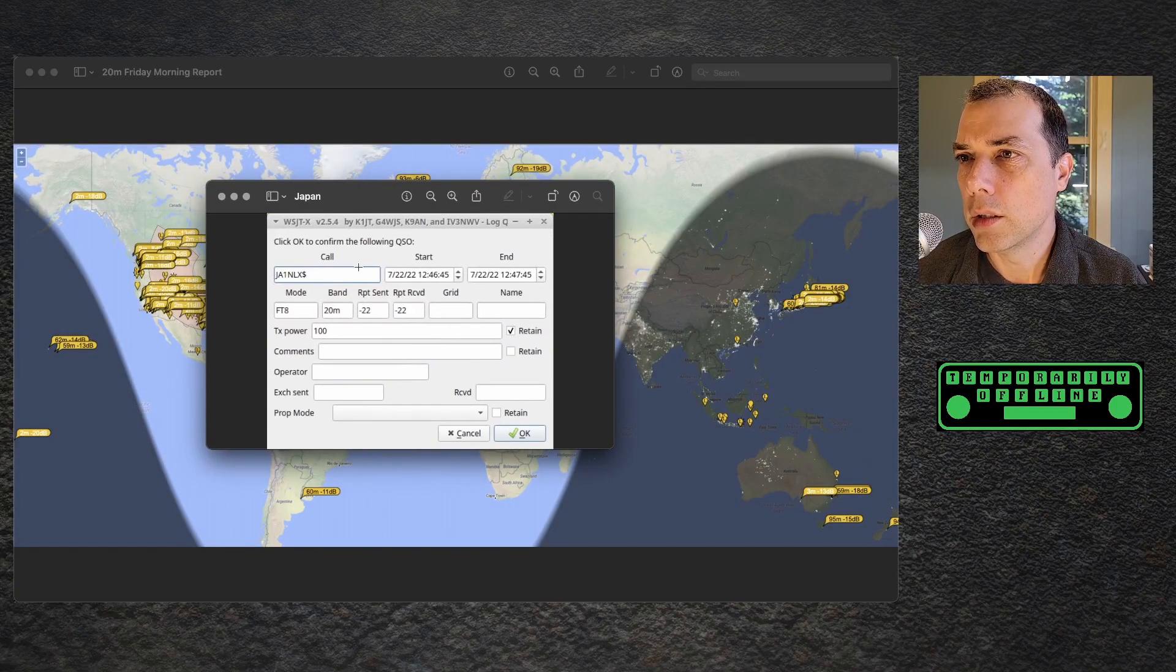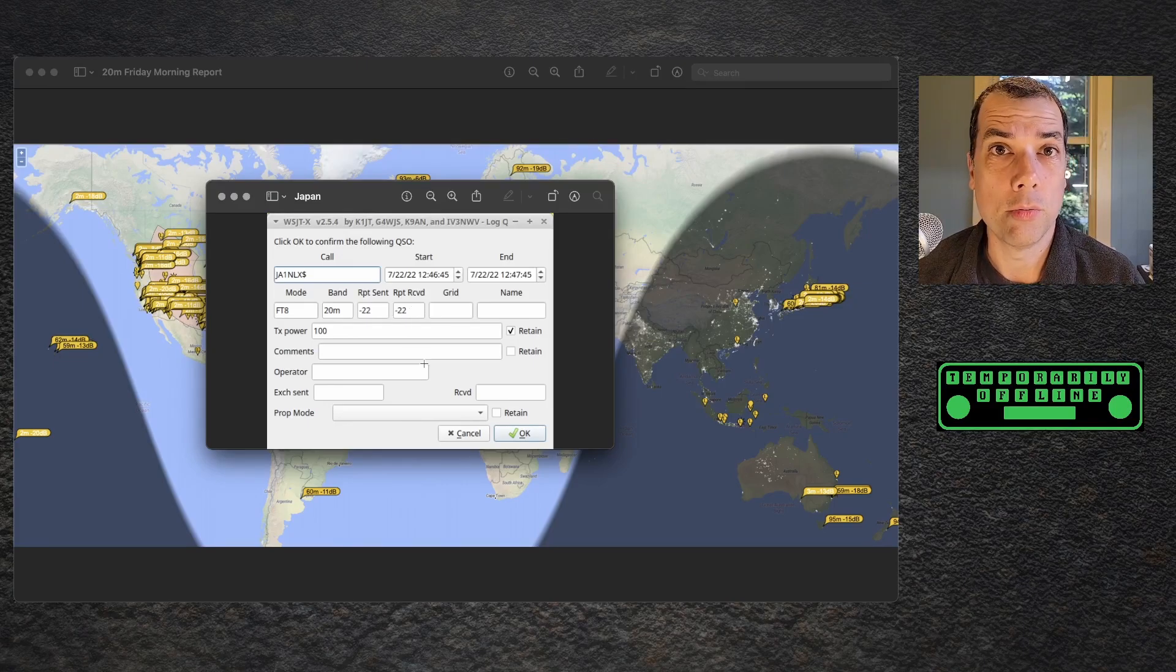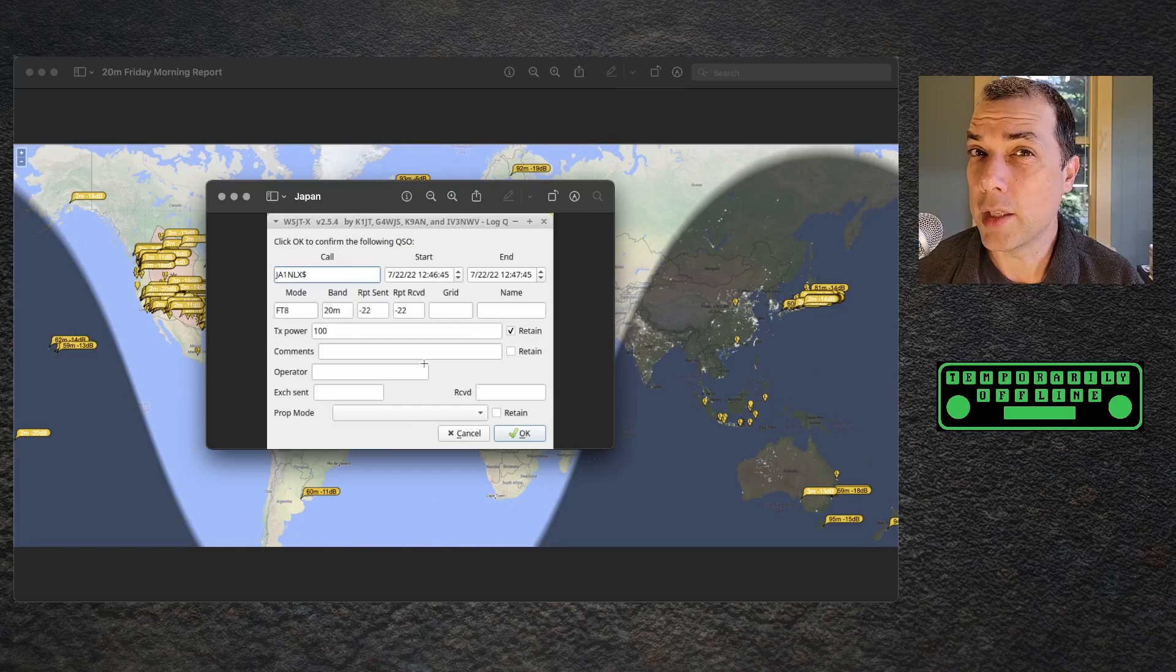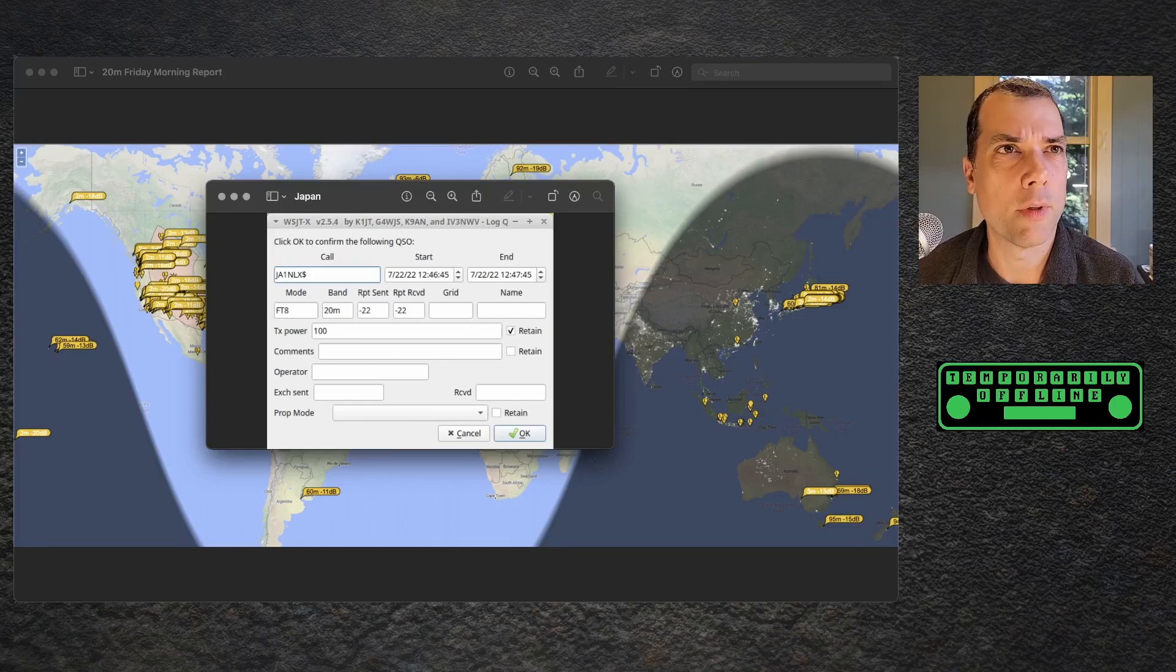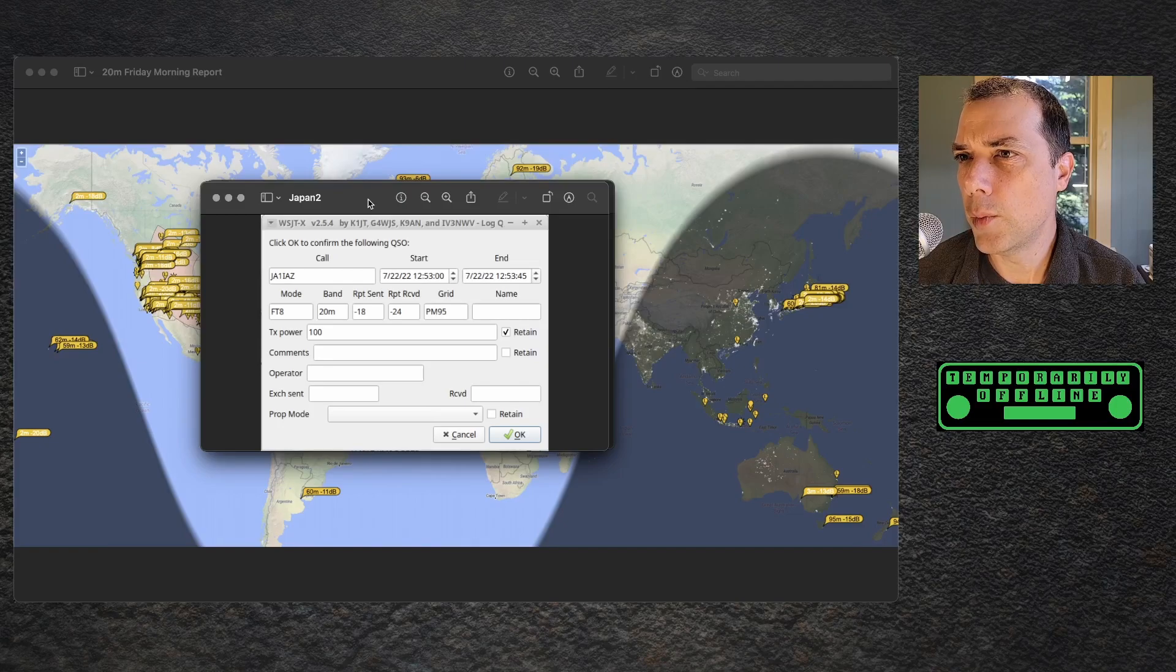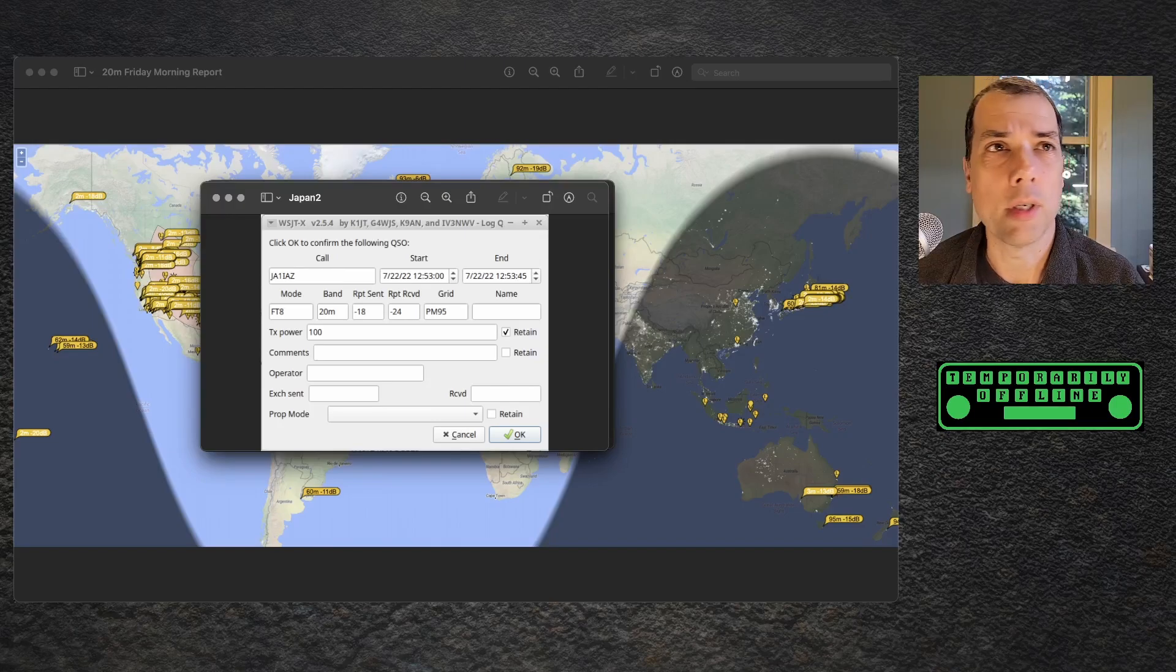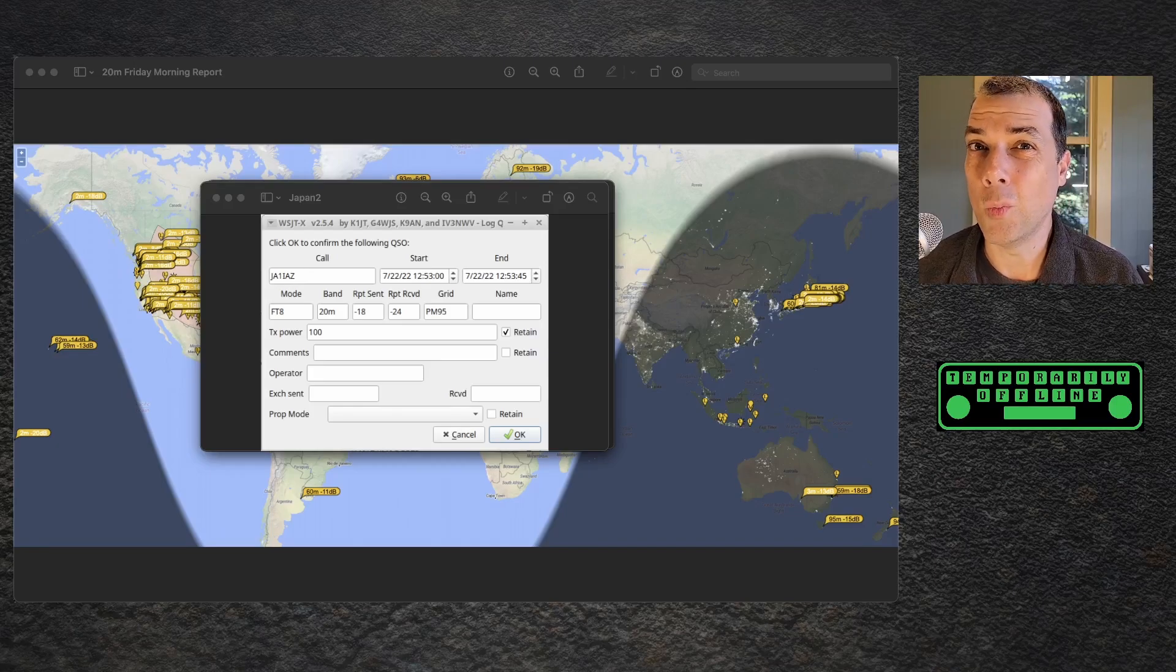So we've got this one here, JA1NLX. And I've got a minus 22 and a minus 22. So minus 22 both ways. The bottom of this is about minus 26. So that's about as low as you can go and still be heard. And that's one of the good things about WSJTX digital modes, FT8. But I do get some better signal reports. So that was my first contact into Japan. And, as you can see, that was 1245 UTC. This is the second one, JA1IAZ. And I sent a minus 18. I got back a minus 24. So I'm starting to hear them a little bit better. And, again, a lot of this has to do with band conditions and with station configuration on both ends.